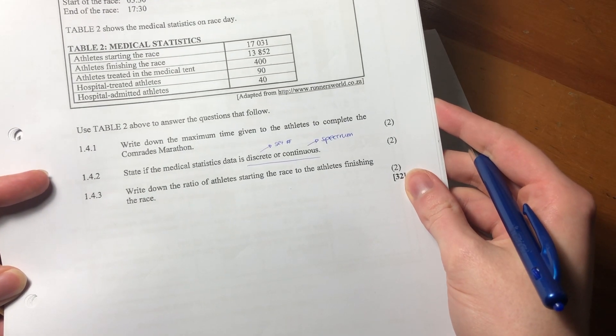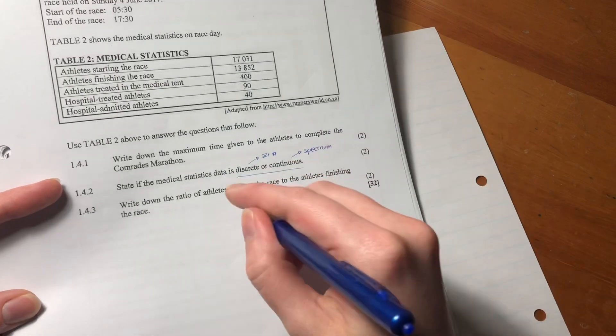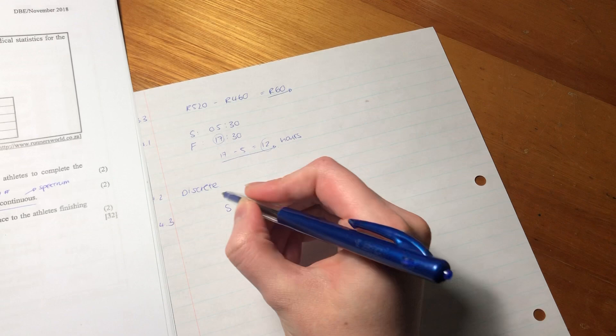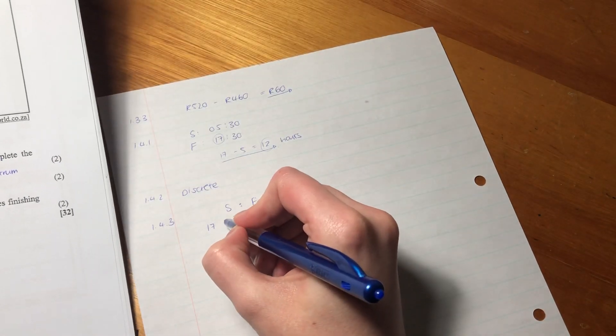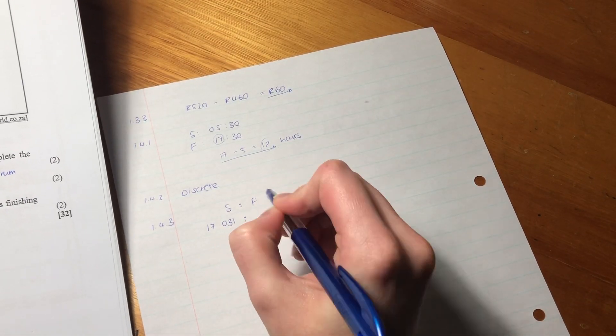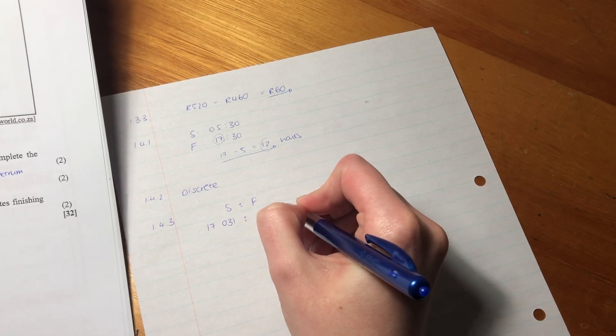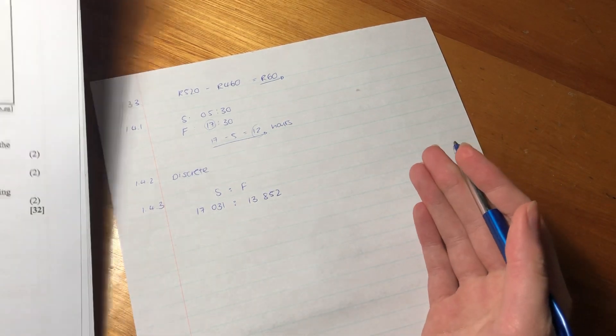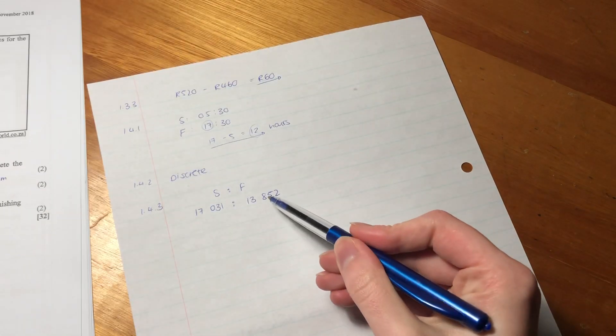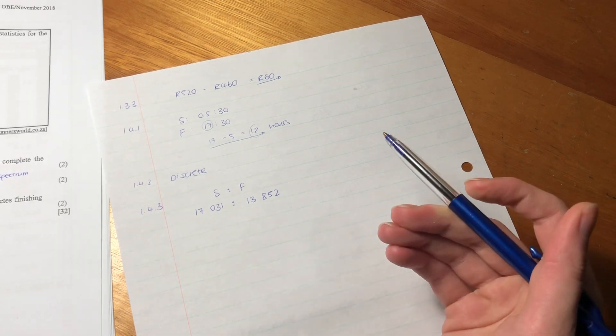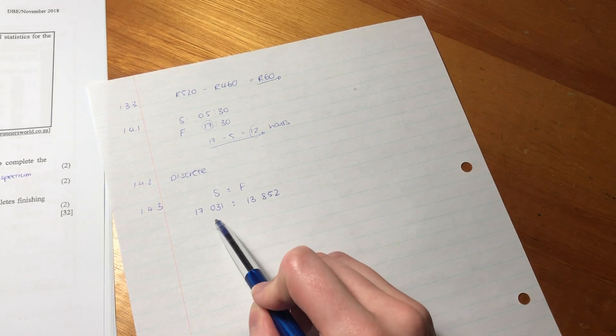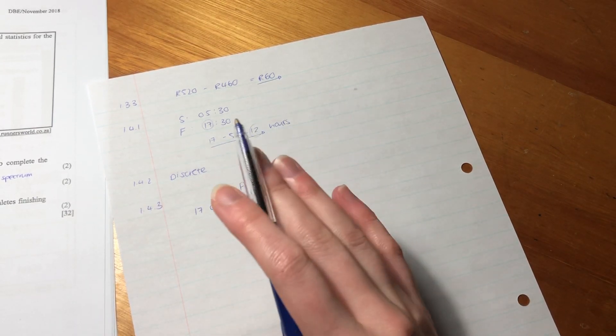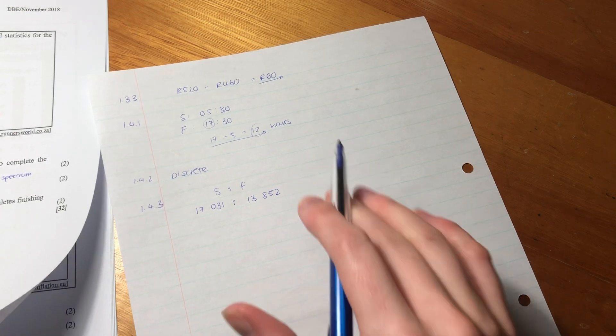1.4.3 says, write down the ratio of athletes starting the race to athletes finishing. So starting to finishing. Those who started was 17,031. And those who finished was 13,052. They didn't tell us to simplify the ratio, so you can actually just leave it like this. I know often we do have to simplify it, but they haven't stated that. Also, this is not an easy one to simplify. So don't create work for yourself where there isn't work. So that is the end of that video. And we can now move on to question two.